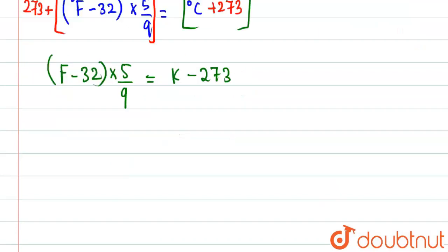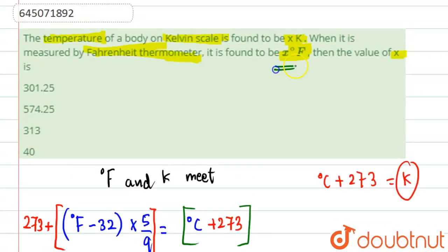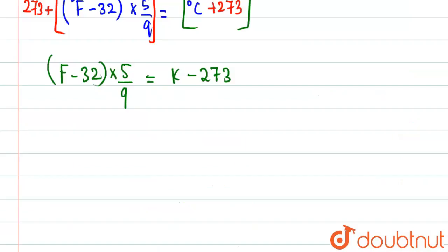So basically over here, what we'll do now? We'll solve the thing that basically when the temperature given is X, so we need to find X. So basically for K, the value of K is also X. The value of degree F is also X. So what we'll do, X minus 32 into five by nine must be equal to K, you can say X minus 273.